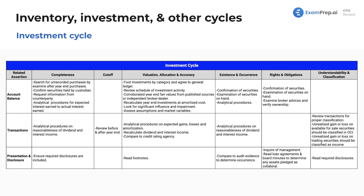We're going to see some items. For example, unrealized gain or loss — unavailable for sale. Security should be classified in OCI. This is something you see in the financial exam. This is dealing with buying and selling stocks, whereas we've also got a schedule of investment activity that could very much relate to buying equipment, buying machines to then produce something.